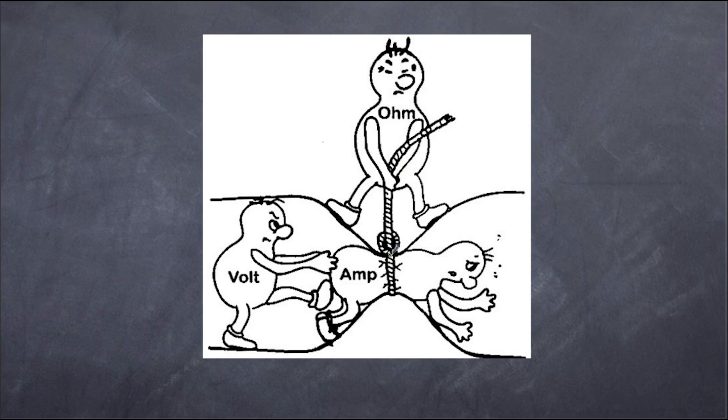If you increase the resistance, you're going to slow the rate of flow. If you increase the voltage, you'll increase the rate of flow. The two determine the amount of current. So that's a summary of voltage, current, and resistance. I hope that has helped you.